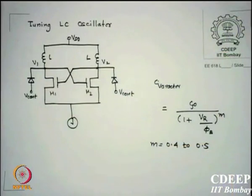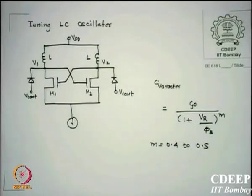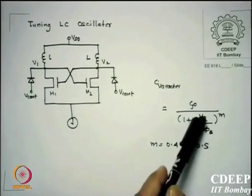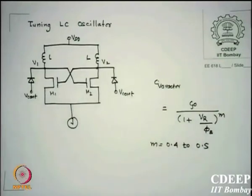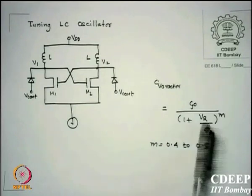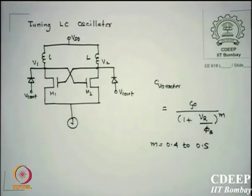In this case, Vr stands for the reverse bias and φb is the built-in potential of the source-drain junction in the substrate — the same diode used here — which typically has a built-in voltage of around 0.7 V or 0.65 V. By varying the control voltage, the capacitance changes; remember, the larger the voltage applied, the smaller the capacitance.